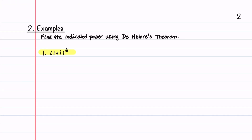Let's dive into our first example. Our first step is to find r. r is the square root of a squared plus b squared, which equals the square root of 1 plus 1, giving us root 2.